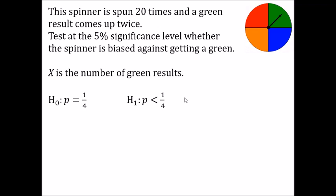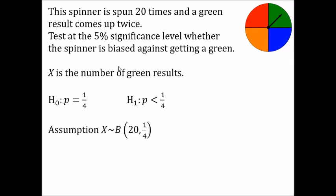The next thing we always have to do is write down the distribution of our random variable assuming that the null hypothesis is true. In this situation it's clearly binomial — it might be green or it might not be, there are 20 spins altogether, and assuming the null hypothesis is true our p is a quarter.